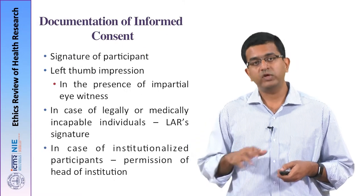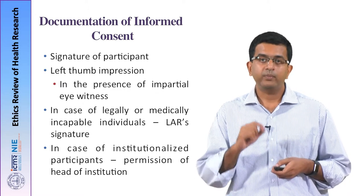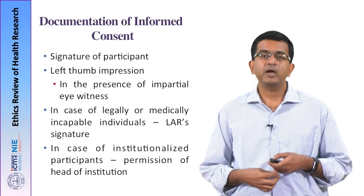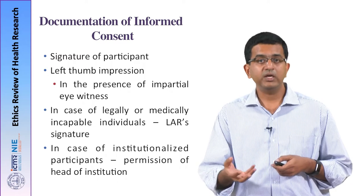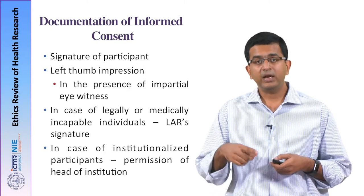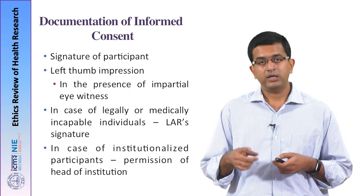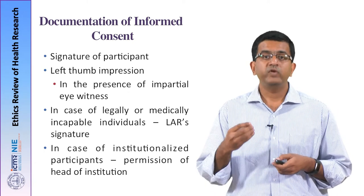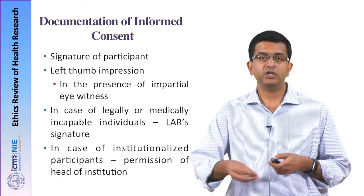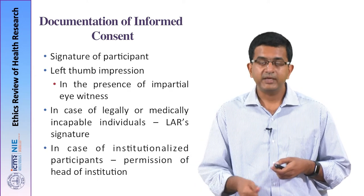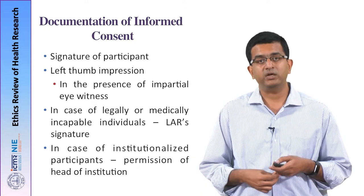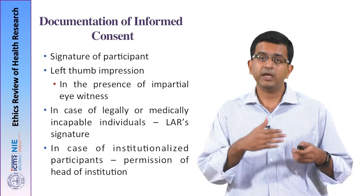The documentation of the informed consent happens by putting the signature of the participant. In case the participant lacks the ability to read or write, then the left thumb impression has to be placed. When a left thumb impression is being placed instead of a signature, this has to be witnessed by an impartial third party. An eyewitness has to be there when the thumbprint is being placed, and this eyewitness should witness the entire process of administration of the consent — not just the signature, but the entire process.